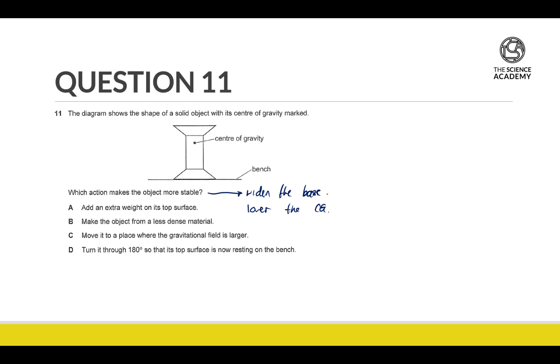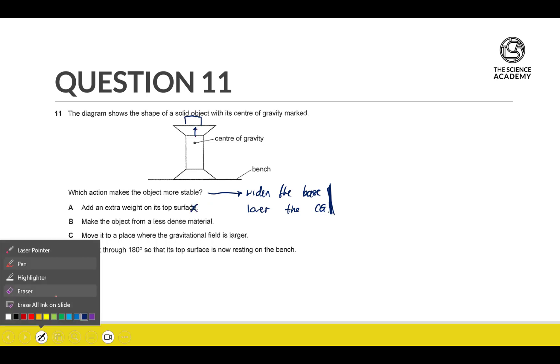Let's take a look to see which of the options corresponds to either one of these actions. If we add an extra weight on the top, we are raising the CG, so obviously this is not going to be correct.